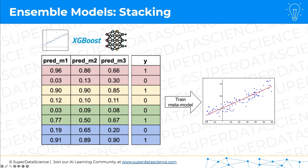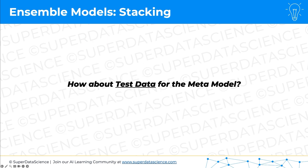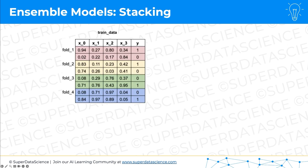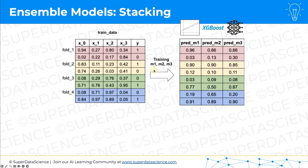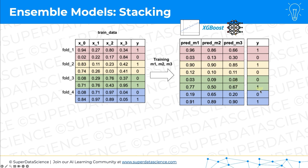At this stage you might wonder: what about the test data for the meta model? So far we've only been working with the training data, and the test data is still untouched. From the training data we've obtained the three prediction columns and added the dependent variable again, and we use all of this to train the meta model.